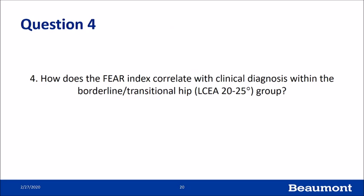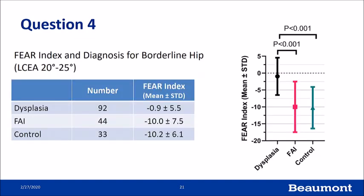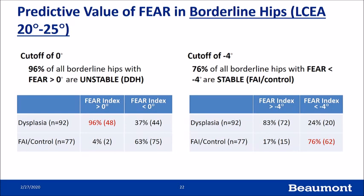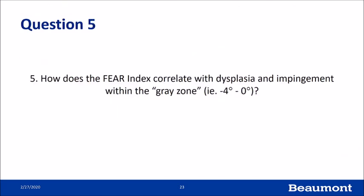The FEAR index also performed well within the difficult borderline/transitional group of hips, though there is significant overlap. There is a statistically significant difference between the FEAR index for dysplastic patients versus impingement patients and controls. Using a cutoff of zero degrees in this borderline group correctly identified 96% of unstable hips.